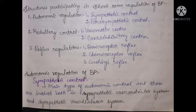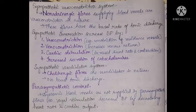Autonomic regulation of BP — sympathetic control is the main type of autonomic control, involving both the sympathetic vasoconstrictor and sympathetic vasodilator systems. Sympathetic vasoconstrictor system: noradrenergic fibers supplying blood vessels are vasoconstrictive in nature. These fibers have a basal rate of tonic discharge — tonic discharge meaning slight contraction.